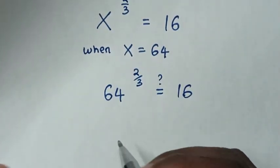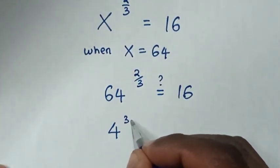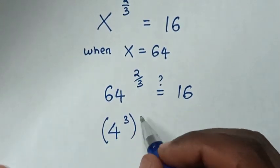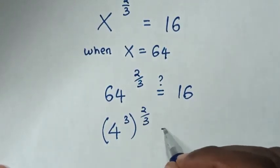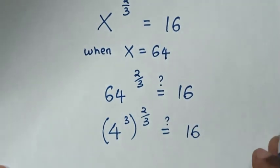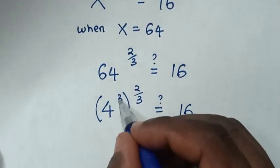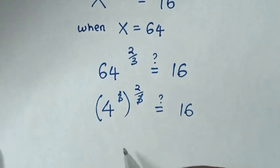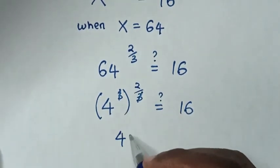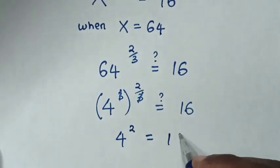Then from 64 is the same as 4 to the power of 3 in brackets to the power of 2 over 3 equals 16. Then to simplify, 4 to the power of 3 will cancel with this 3, so it will be 4 to the power of 2 equals 16.